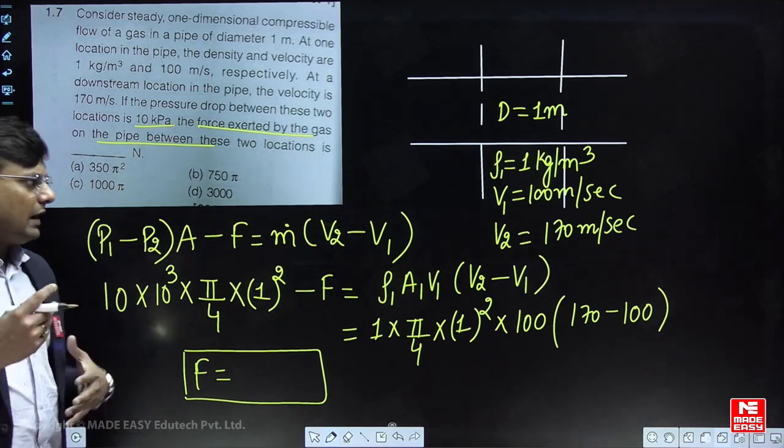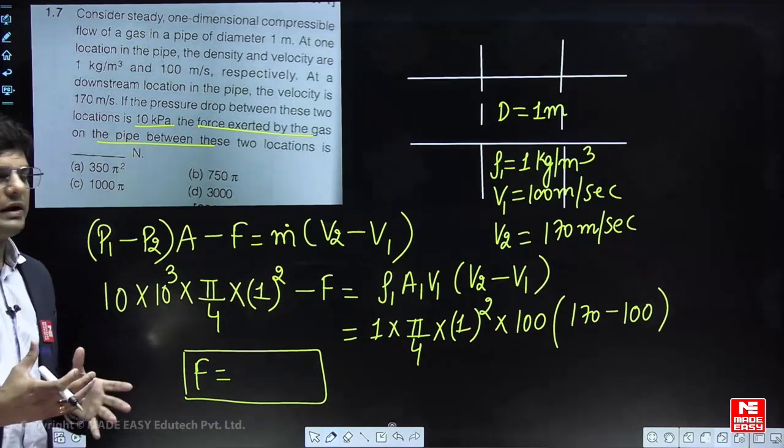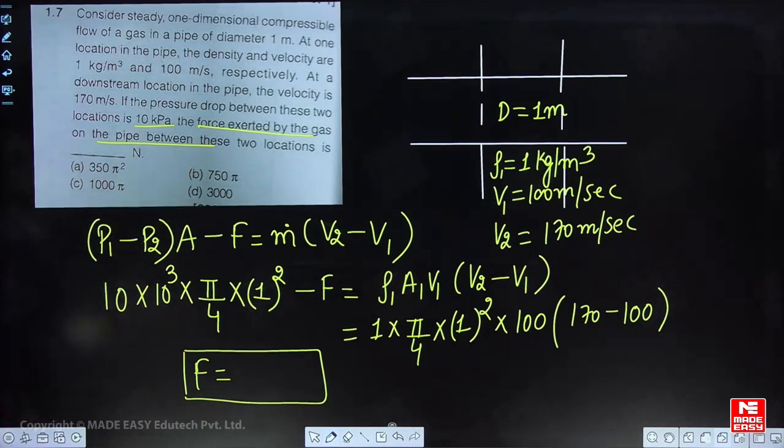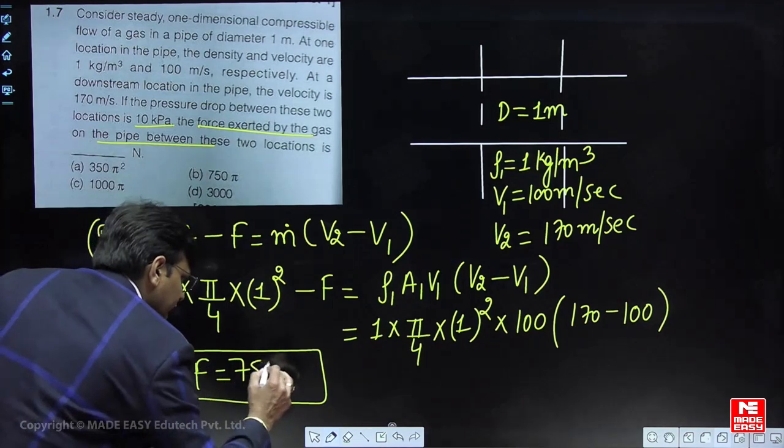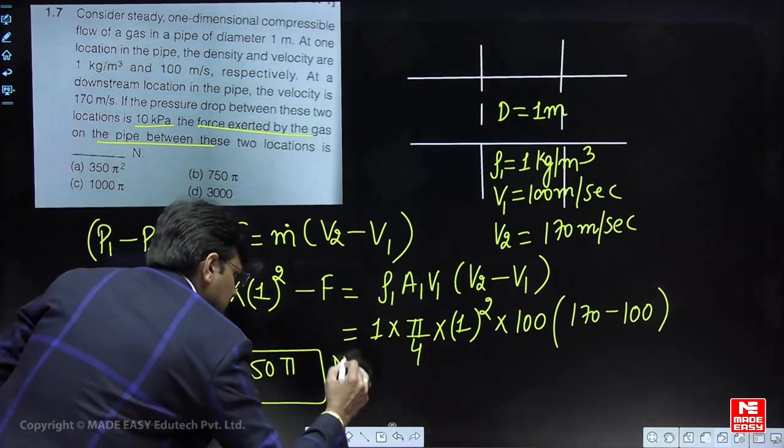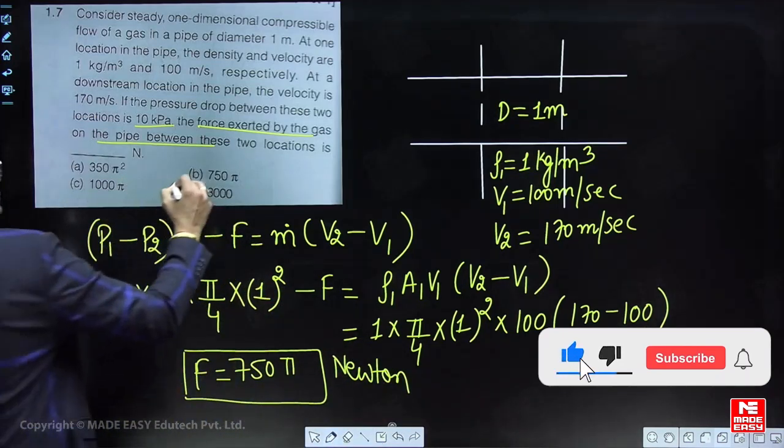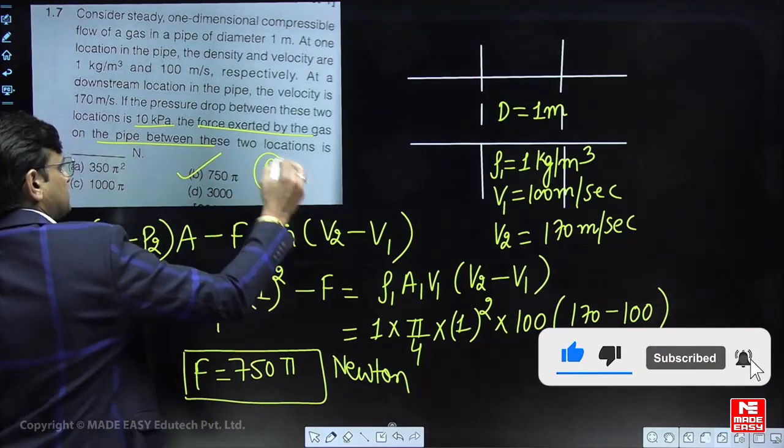In this case no need to put the value of pi. The options are given in terms of pi. So from this you will get directly 750π newtons. That is the answer for this question. The answer is B.